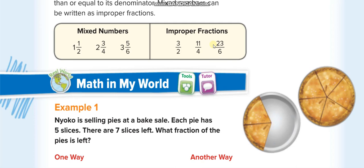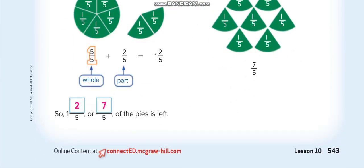For 23/6: how many 6s fit into 23? 6×1=6, 6×2=12, 6×3=18, 6×4=24 — too big. So three 6s fit. 23−18=5 remainder, giving 3 and 5/6.